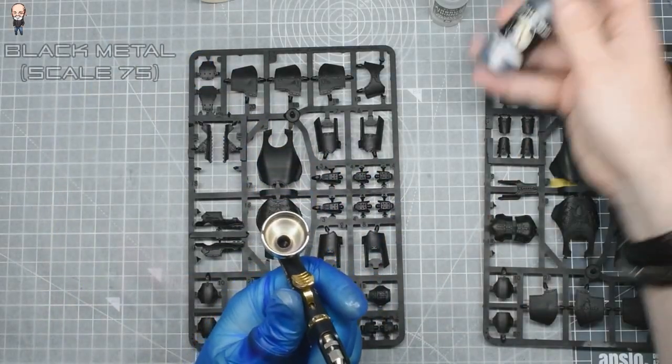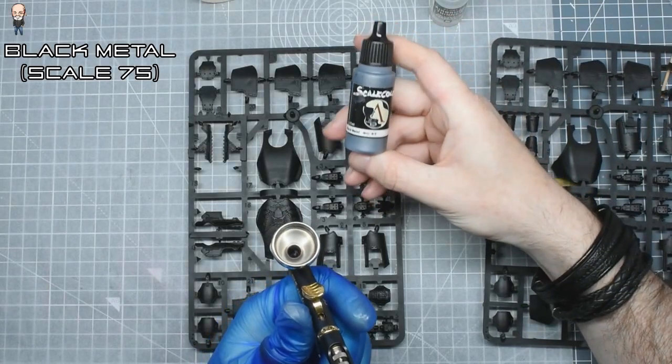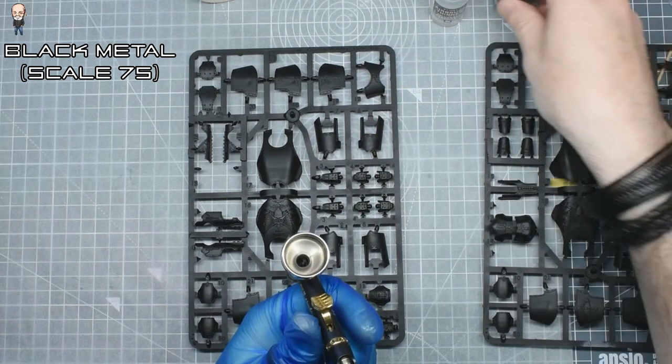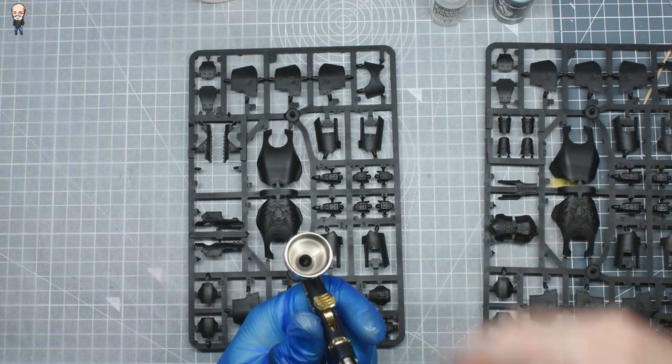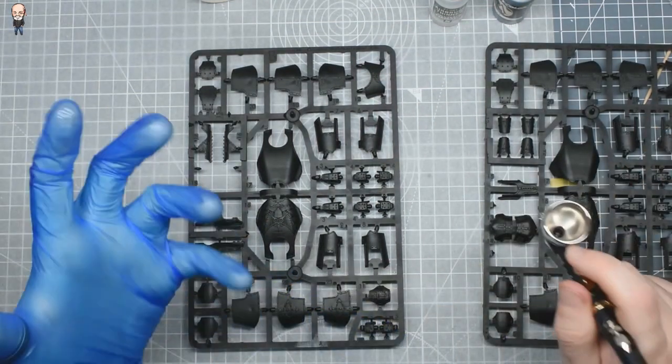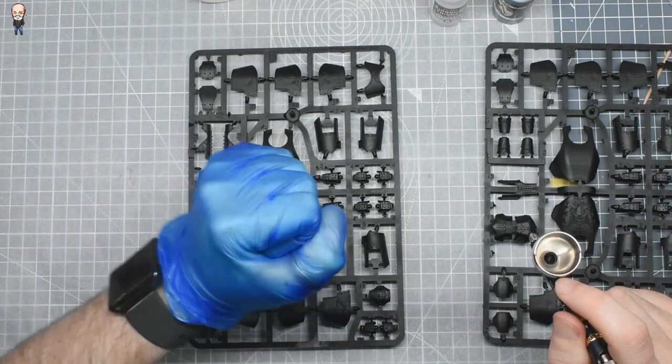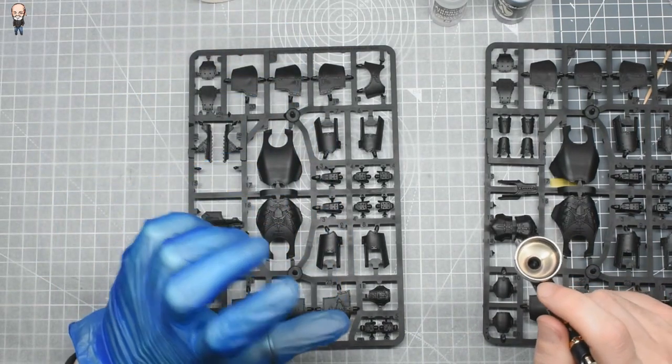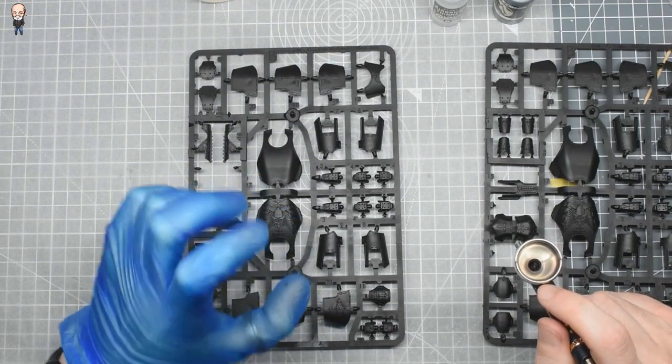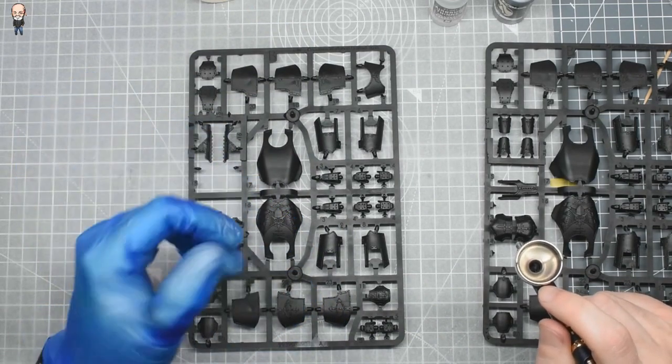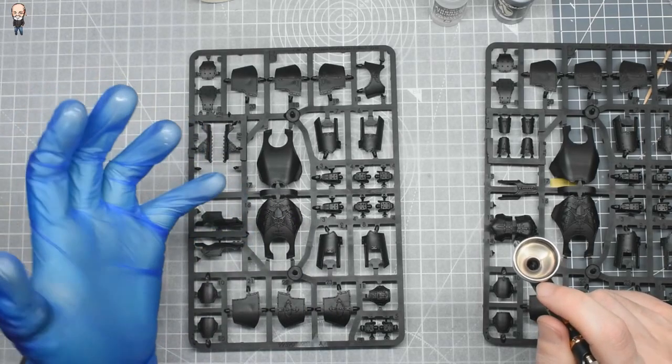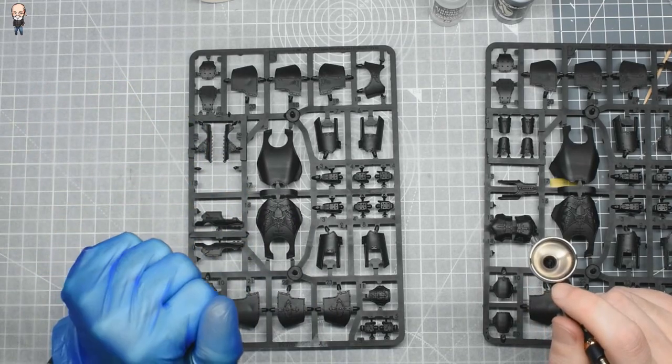The silver color I'm going to be using is Scale75's Black Metal. I'm using Scale75 because I really like the paint and they go on really super smooth. If you wanted to use other manufacturers, Vallejo Metal Color has a dark metal or gunmetal color that's fine. Leadbelcher would work exactly the same. If you don't have an airbrush, paint it with a brush with Leadbelcher.